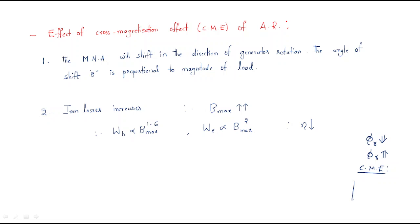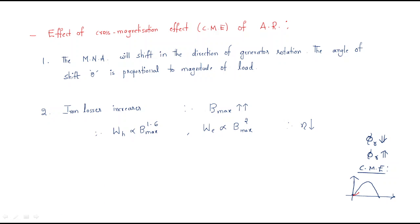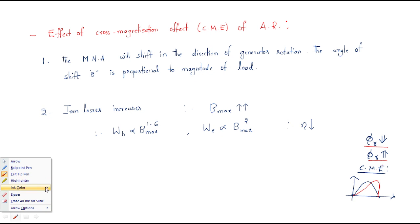Cross magnetization changes the flux waveform shape. For example, if the original flux waveform has a certain shape, the cross magnetization effect will slightly alter that waveform. This is the key effect of cross magnetization — it neither increases nor decreases the flux but distorts the waveform. Also, the magnetic neutral axis (MNA) will shift in the direction of generator rotation.